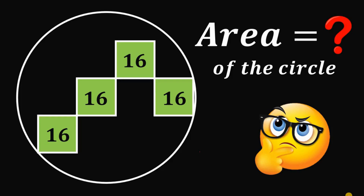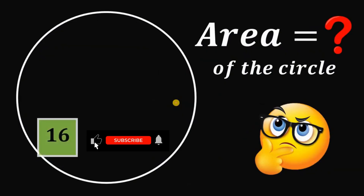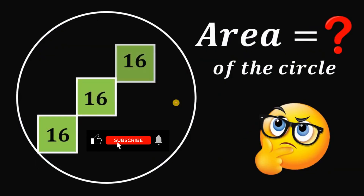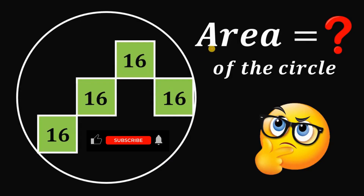Can you solve this geometry challenge? Here's the question: given a circle, we insert four identical squares having an area of 16 square units. The question is, what is the area of the circle?